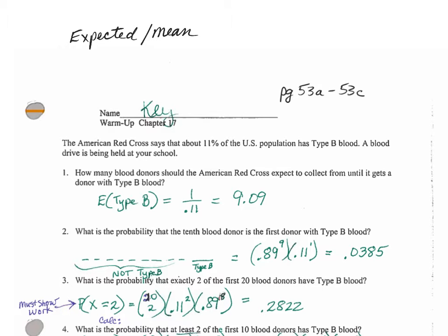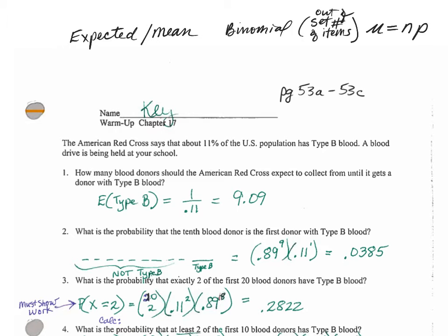There are formulas for binomial and geometric expected, so let's go ahead and recall those. If a problem is binomial, then you know that it is out of a set number of items. For example, if 150 people go donate blood, what is the expected number that will be type B? So binomial would be out of a set number, and that formula is N times P. That one also has a standard deviation formula, and both are on the formula chart.